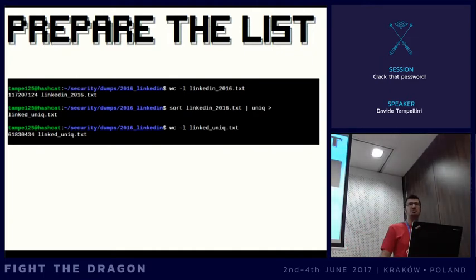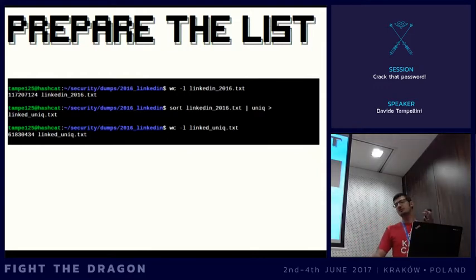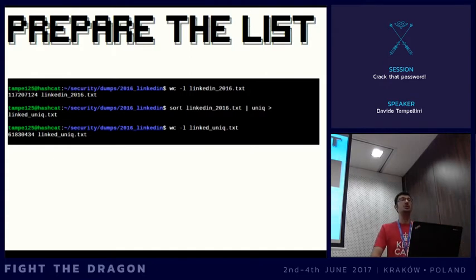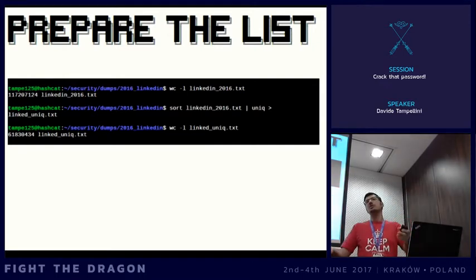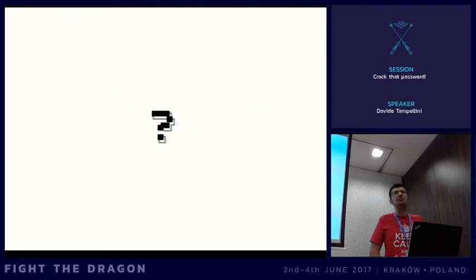For example, working on the LinkedIn dump: the original dump has more than 170 million lines. After sorting and removing duplicates we drop it to 61 million lines — about 50% reduction. This happens because LinkedIn was using the SHA-1 algorithm, which is the same family as MD5, so the same password always produces the same hash, and it wasn't using a salt. So we removed 50% of the hashes and can focus on unique ones.